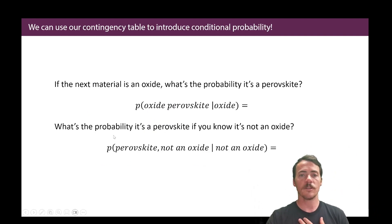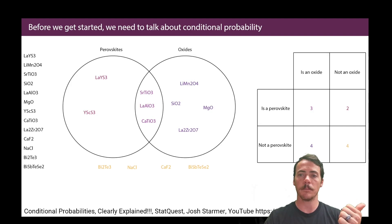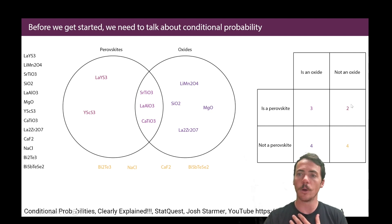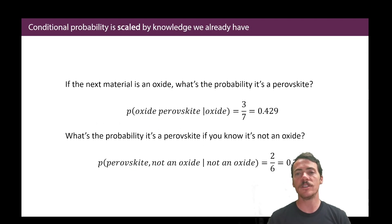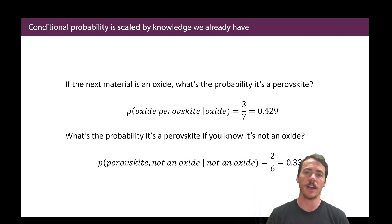Same thing here: what's the probability of it being a perovskite if you know that it's not an oxide? We'd say, okay, perovskite is here, and if it's not an oxide there are six of those, so now it's two out of six. So these are different probabilities. In other words, a conditional probability is a probability that has been scaled by some knowledge we already have.